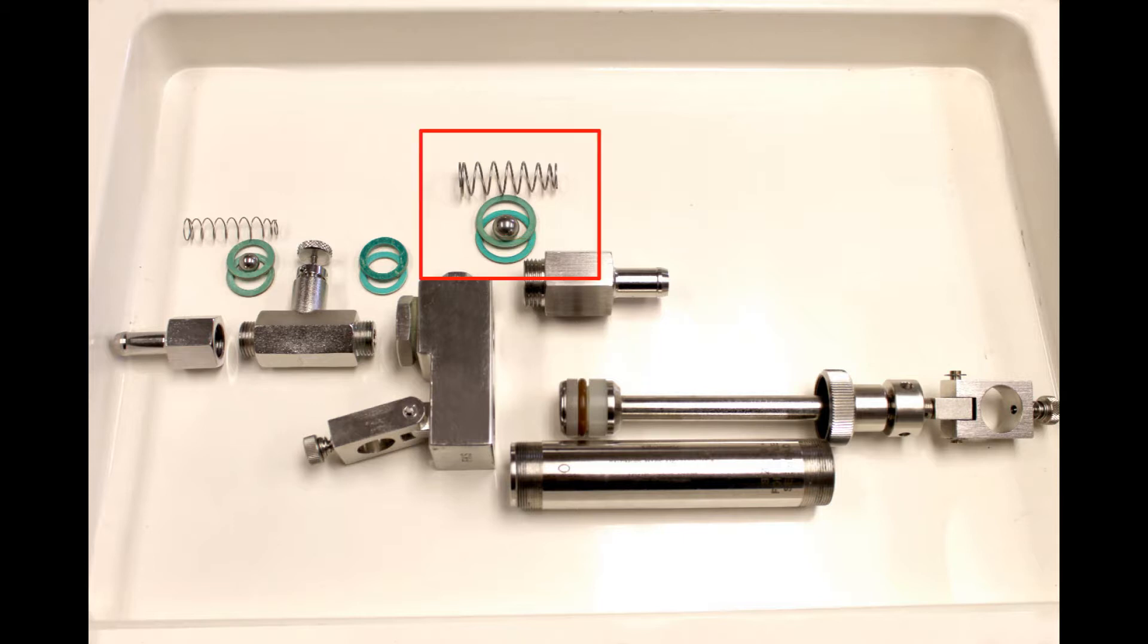These are the gaskets, ball bearing, and spring for your lower intake valve. Note the more narrow end of the spring should be touching your ball bearing.